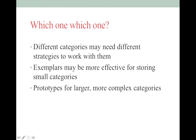So which one is right? For exemplar theory, all the same rules still apply — there's still prototypicality, still a hierarchical structure with superordinate, basic, and subordinate levels. The debate is just whether you're using a specific example or a more abstract picture. It may be that different categories need different strategies: exemplars have been found to be better for smaller categories with fewer members or features, while prototypes are better for large, complex categories like different types of animals.